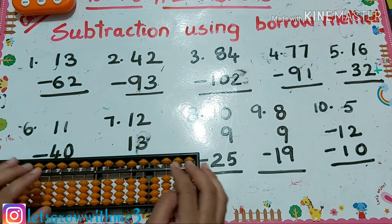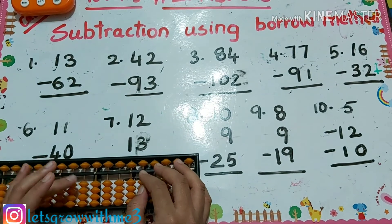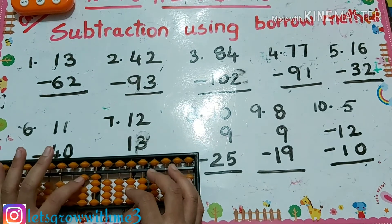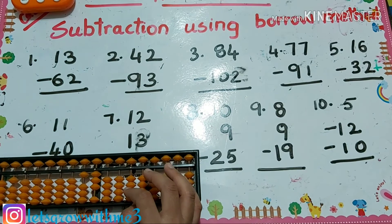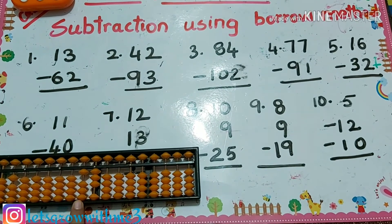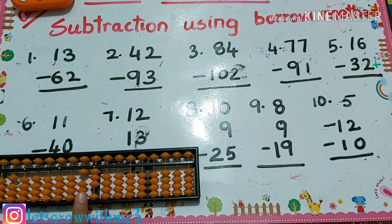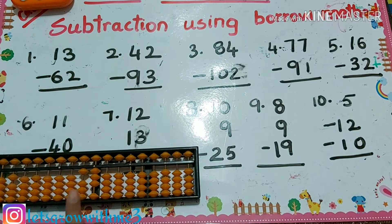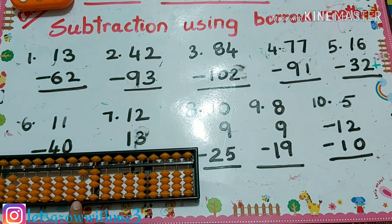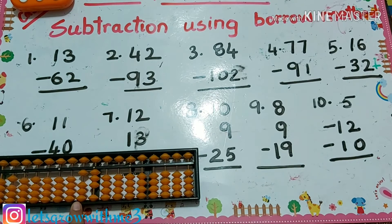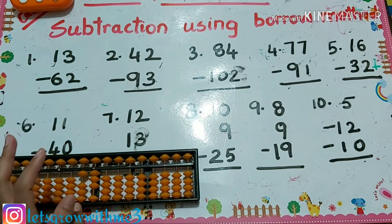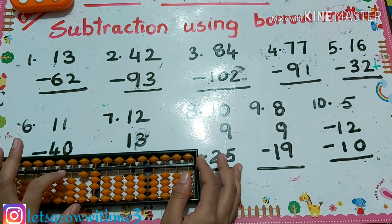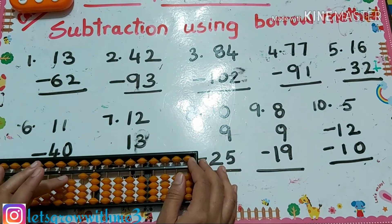Let's solve the problem 13 minus 62. We have to put the value 13 on the abacus. Next I have to do minus 6 on the tens column, but I have only one bead on the tens column — I can't subtract 6 from 1.